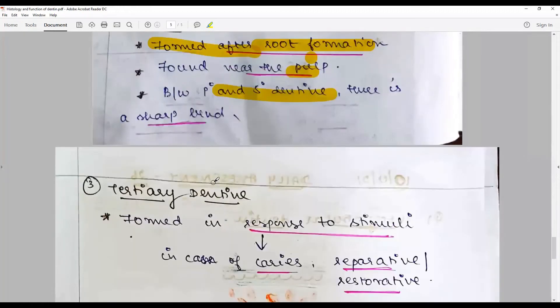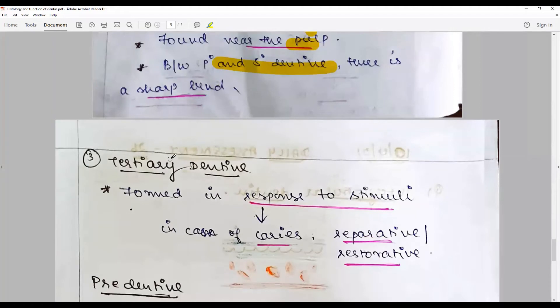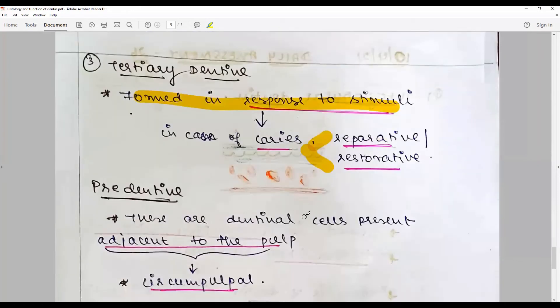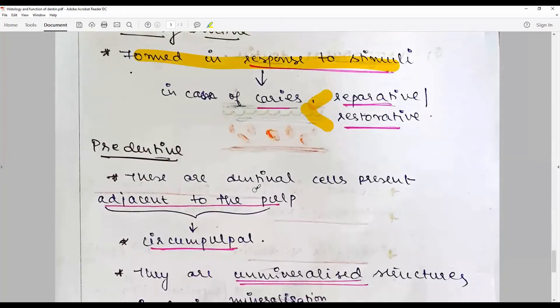Tertiary dentin is formed in response to noxious stimuli in case of caries. It can be classified as reparative or restorative. In reparative, the odontoblast survives the noxious stimulus, whereas in restorative the odontoblast failed to survive and new odontoblasts are differentiated. Predentine is newly formed dentine adjacent to the pulp.